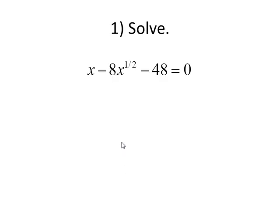So here's the problem: x minus 8x to the 1 half minus 48 equals zero. As I mentioned, we're going to let u equal x to the 1 half power. We'll let u be the variable part of the term that has the smallest exponent, so x to the 1 half.